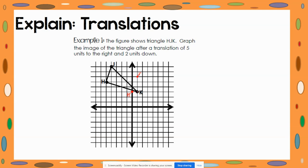Now put your pencil on K. Move five units right, then two units down, and here's the point — we are going to call it K prime. Now connect the points with lines. Your lines will probably look better than mine since I'm terrible with this drawing pad. You should see that your triangle is congruent to your pre-image — the translated figure is congruent to the original, and it has just slid down and to the right.